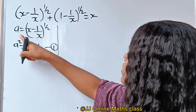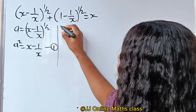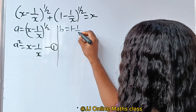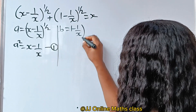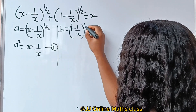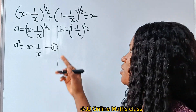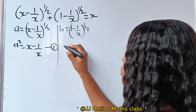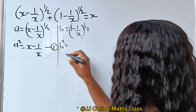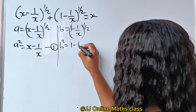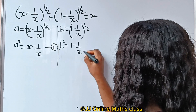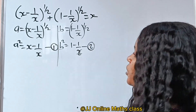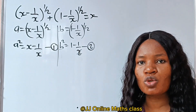Similarly, we are going to say let b equal 1 minus 1 over x raised to the power of half. Similarly, if we square both sides of this equation, we have that b squared is equal to 1 minus 1 over x. We are going to call this equation 2.